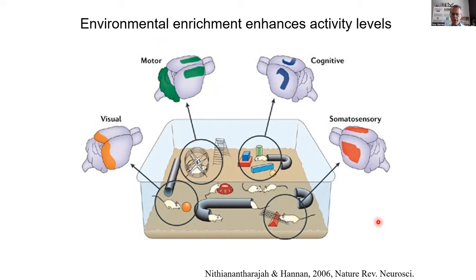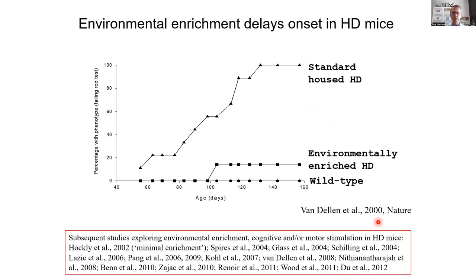In the very first experiments I did with my first PhD student, we took our transgenic mouse model of Huntington's disease, which expressed the human Huntingtin mutation — hence had excellent genetic construct validity, but also excellent face validity. We randomized at weaning, in this case four weeks of age, into either environmentally enriched or standard housing conditions, both the HD and the wild type mice, to see what might happen.